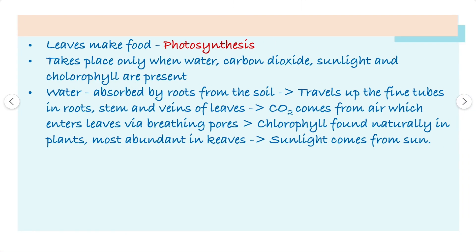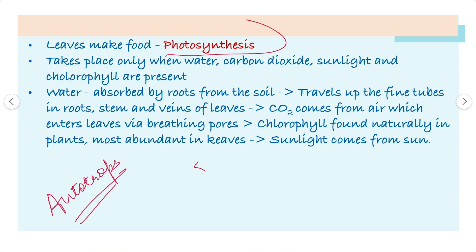As we all know, plants are autotrophs. Autotrophs means they prepare their food by the process of photosynthesis. Photosynthesis is basically a process in which plants manufacture their food.